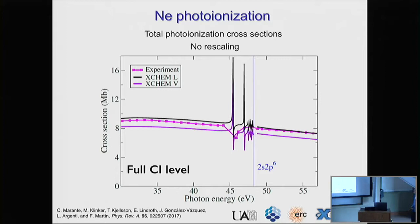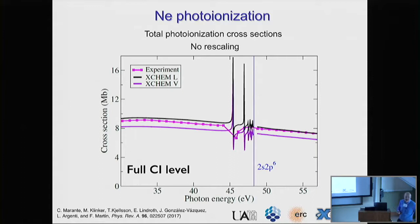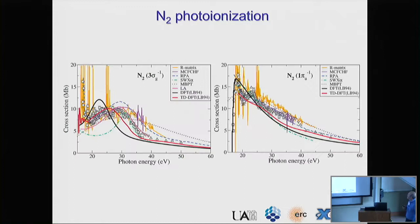Finally, we used this code to calculate the photo ionization of many-electron atoms such as neon, just to check how good it is. Here you see a comparison between our results and experimental data, and I want to emphasize that there was no rescaling of the cross-sections — they came directly from our code. I have to say that calculating wave functions of an atom using a molecular code is not an easy task; you have to work with D2h symmetry, and dealing with the angular momentum algebra in D2h symmetry is not trivial.